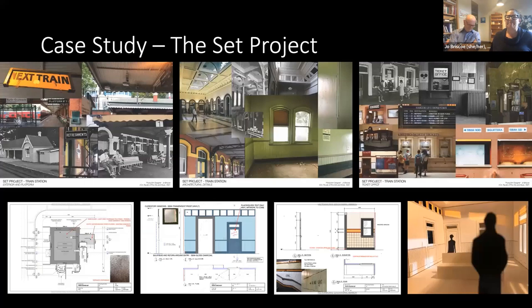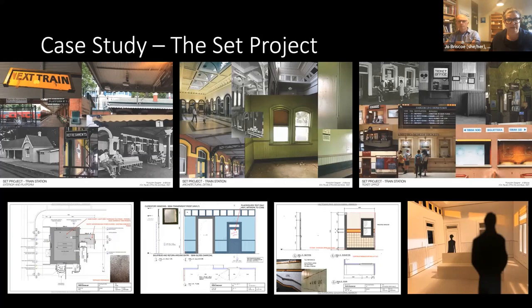In this project we worked a little bit backwards — normally we respond to a story and brief, but here we created the space and then allowed writers to write to suit it. Conceptualizing a space that would allow the maximum amount of interesting stories, I decided what we needed was a train station waiting room. At the top of this reference board you can see images of train stations — references for what the exterior would look like, what kind of windows to use, photos I took at Melbourne train stations, and references from around the world.